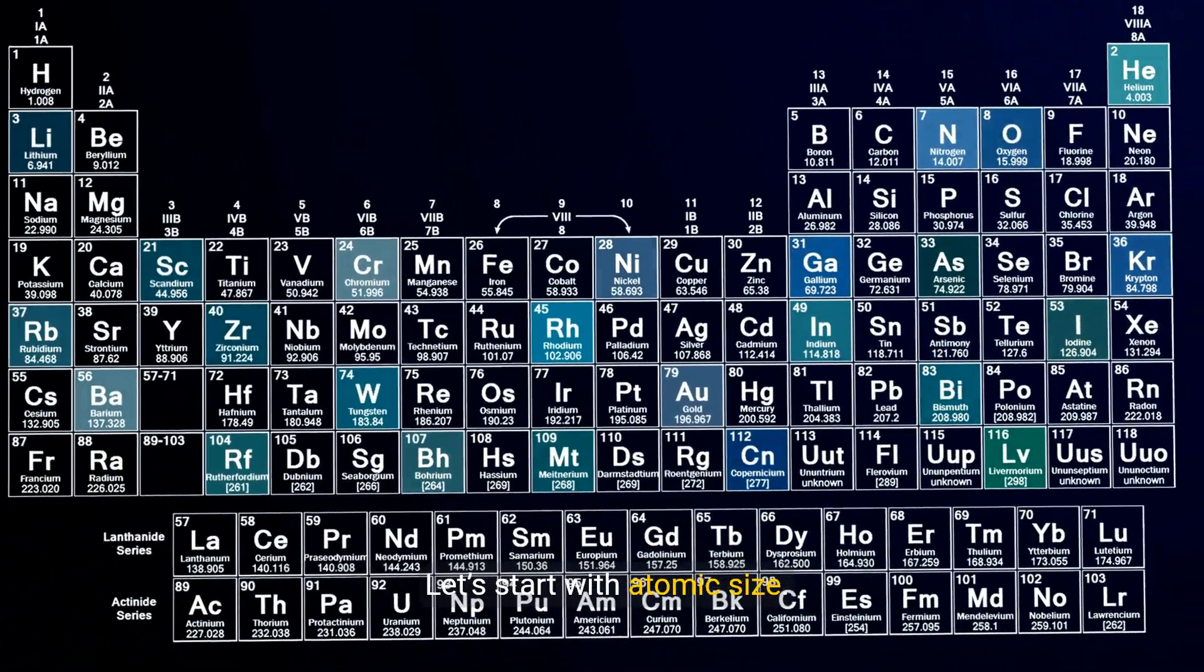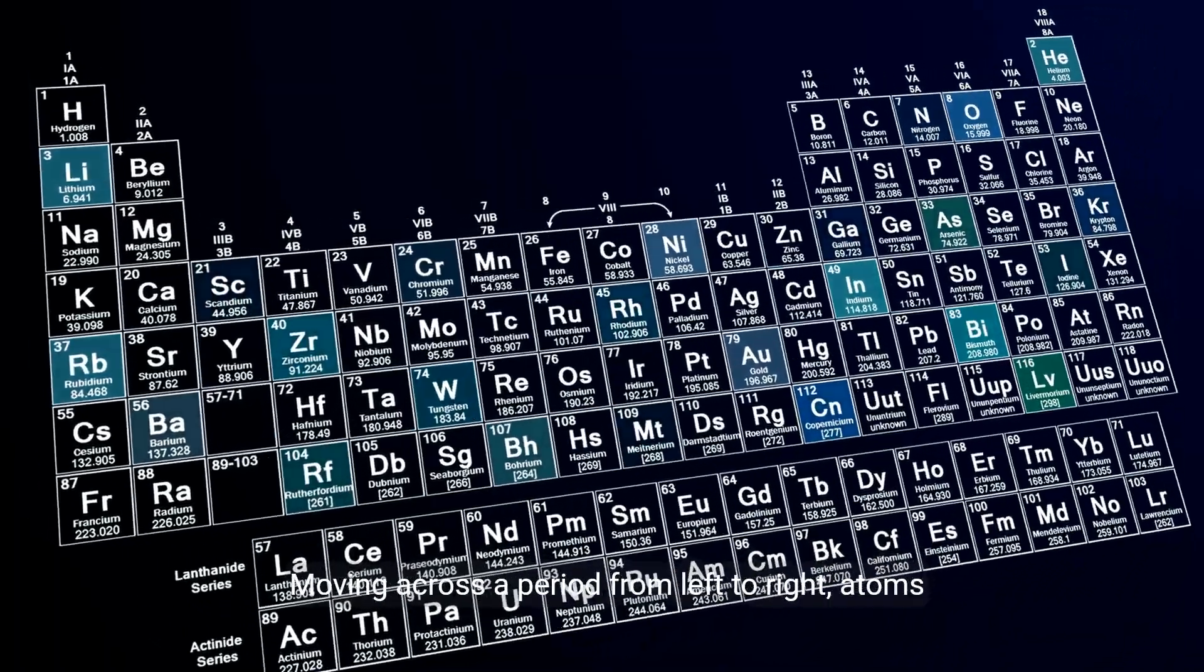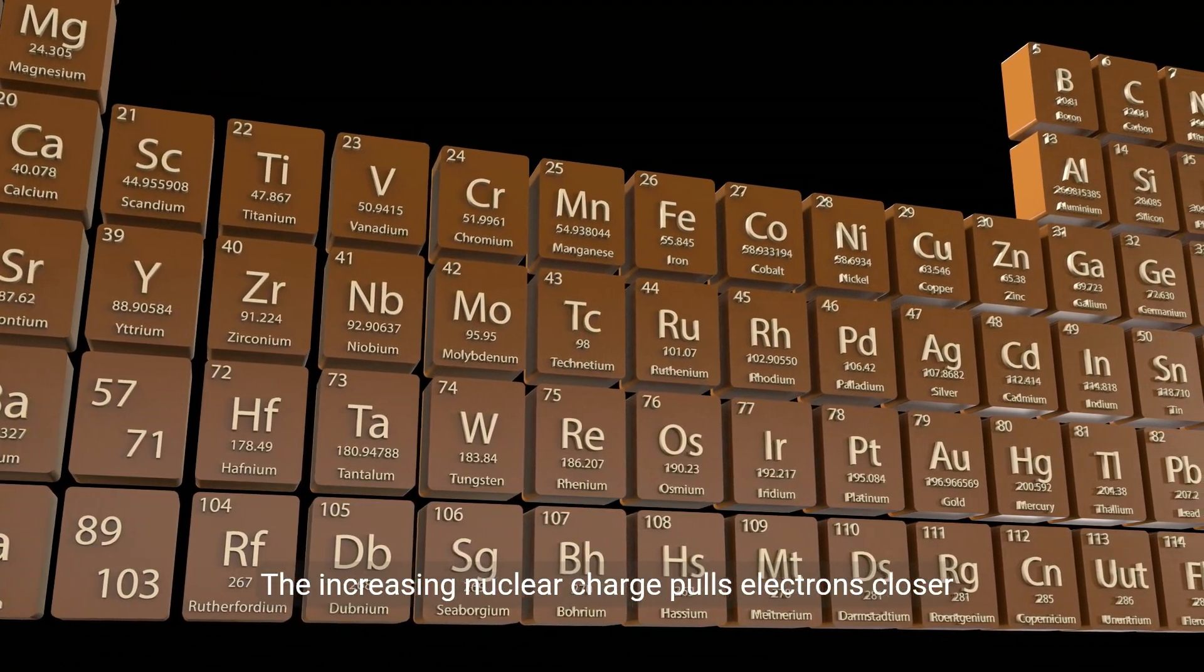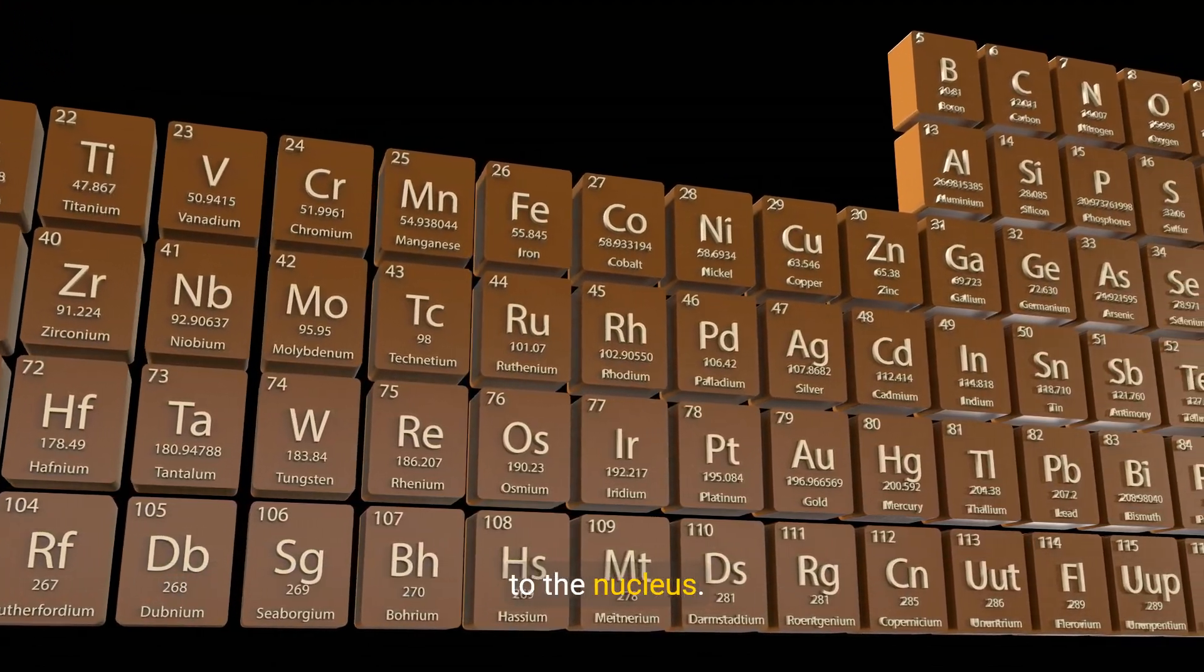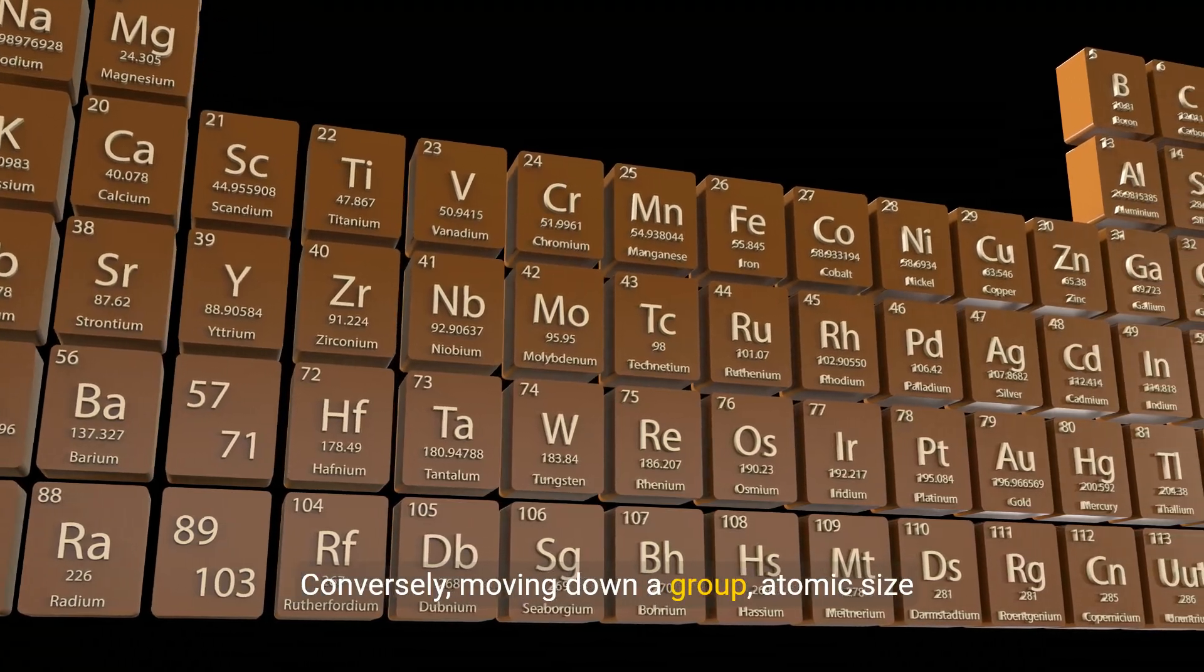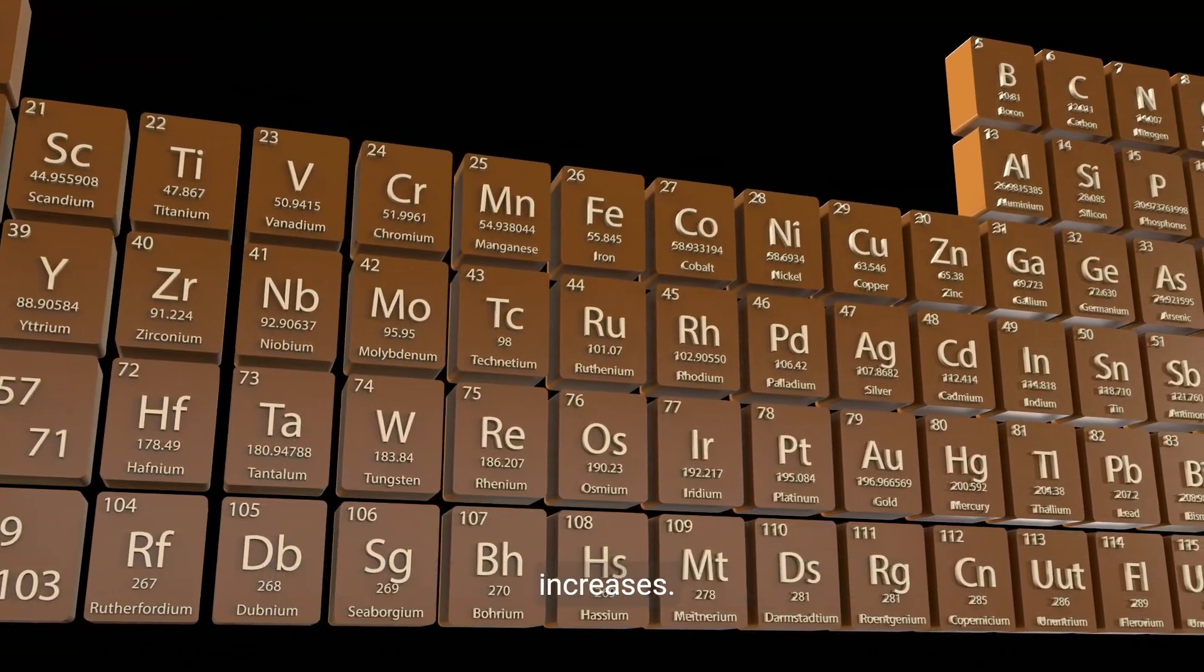Let's start with atomic size. Moving across a period from left to right, atoms get smaller. Why? The increasing nuclear charge pulls electrons closer to the nucleus. For instance, lithium is larger than fluorine due to this trend. Conversely, moving down a group, atomic size increases.